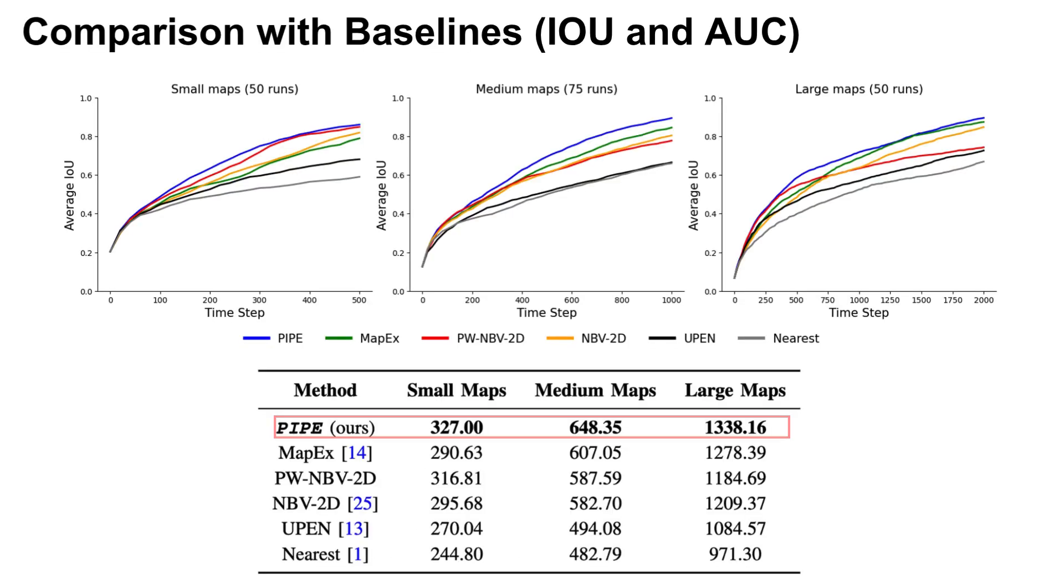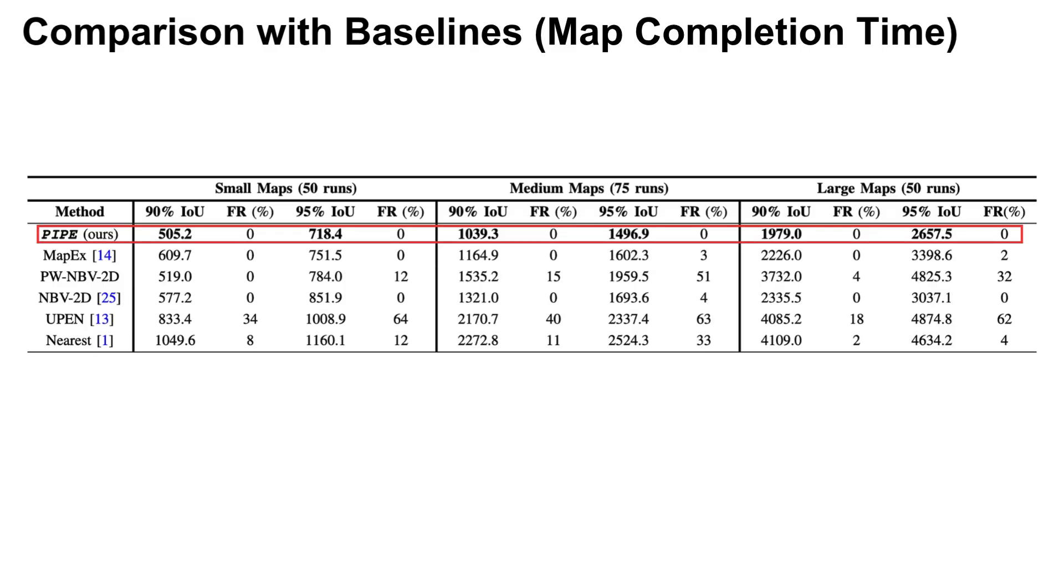We compared our method, PIPE, with other baselines. It shows that PIPE achieves better predicted IOU and AUC than SOTA baselines across all levels of maps. We also compared the time required to complete the exploration, reaching 90% and 95% IOU, and PIPE finished exploration with the shortest time and zero failure rate.